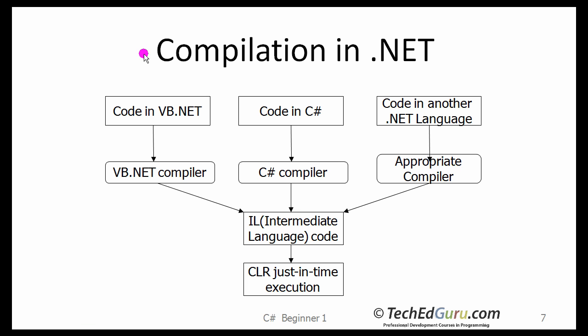How does compilation in .NET work? You write your code in C-Sharp. You use the C-Sharp compiler, and that compiler compiles it to intermediate language code, or IL code. The same thing happens if you compile a program in VB.NET or any other supported language — you need the corresponding compiler to convert it to IL. Once you have the IL code, you can run it with CLR using just-in-time execution.